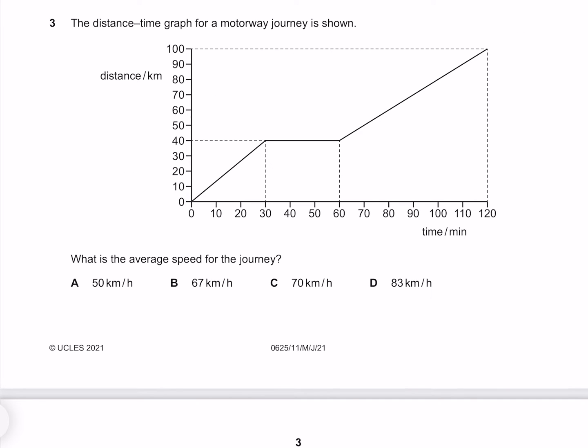The distance-time graph for a motorway journey is shown. What is the average speed for the journey? Our average speed is going to be our distance divided by our time. We see we travel a total distance of 100 kilometers over a duration of 120 minutes. Now if we were to convert this to kilometers per hour, we just need to recognize that 120 minutes is two hours. 100 kilometers per two hours means 50 kilometers per hour. So our answer must be A.